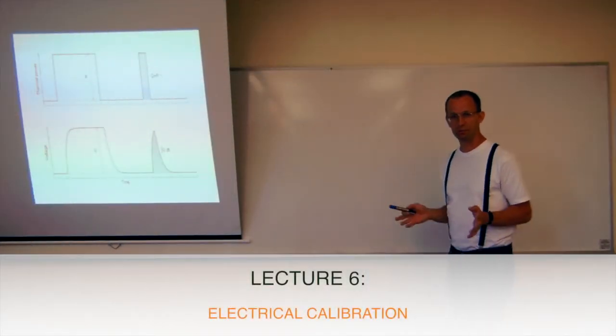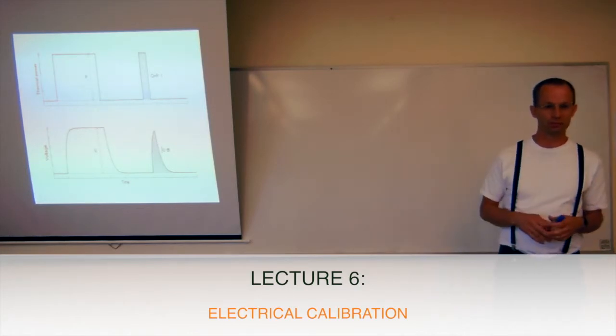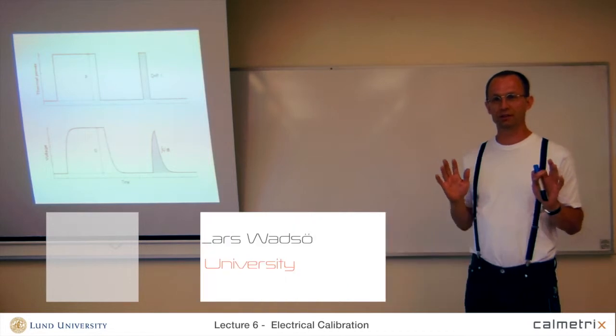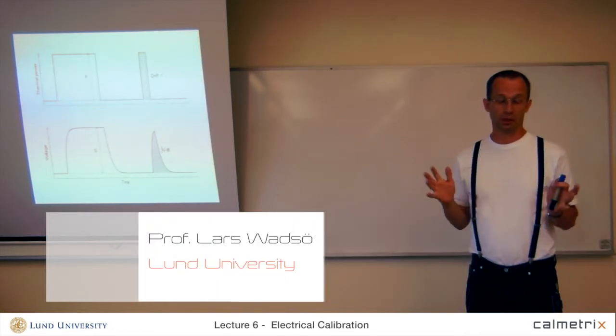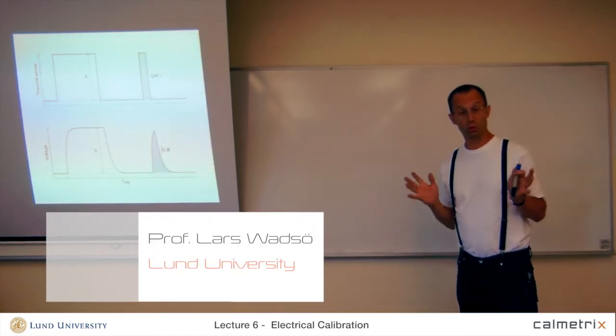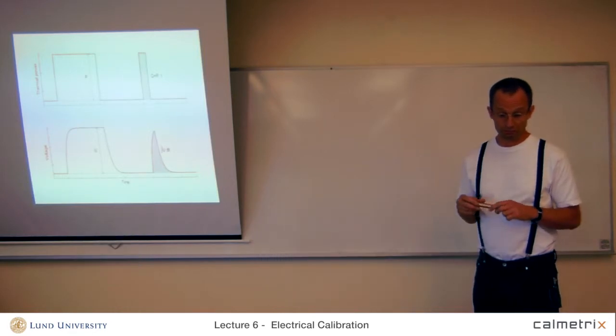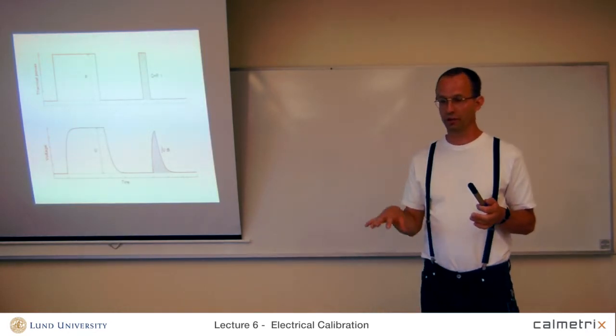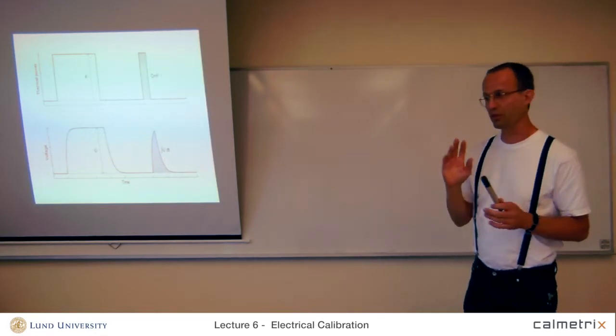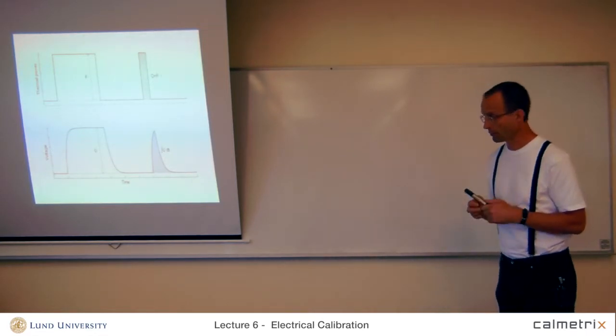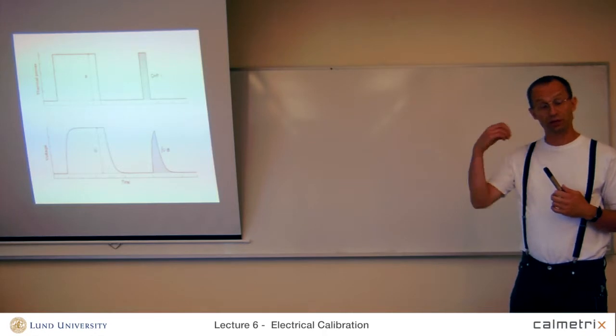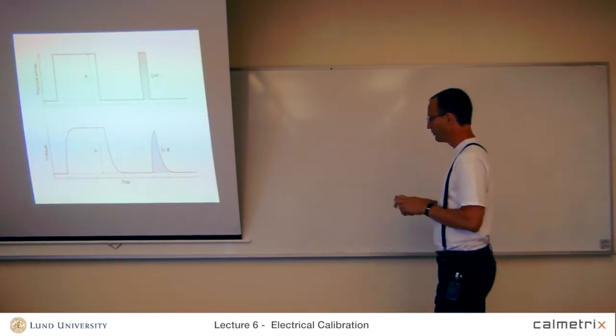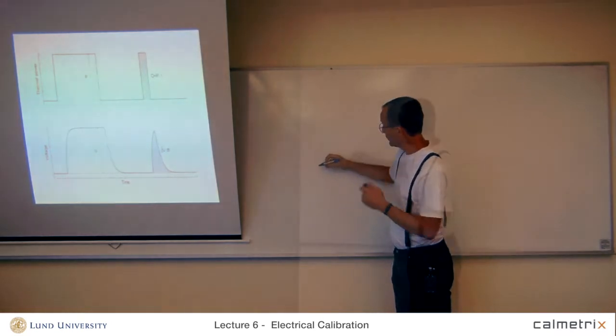The most common way of calibrating isothermal heat conduction calorimeters is electrical calibration. This is easy, convenient and quick. So, this is the normal way that calorimeters are calibrated and this is done by placing a heater in the calorimeter or in the sample or close to the sample and passing an electrical current to the heater producing heat.